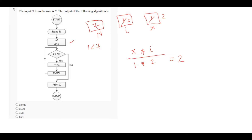Again, we check that i is less than n. Obviously, 2 less than 7, so increment the value of i by 1 — it will be 3. The present value of x is 2 into i, that is 3, which will be 6. So now the present value of x is 6.